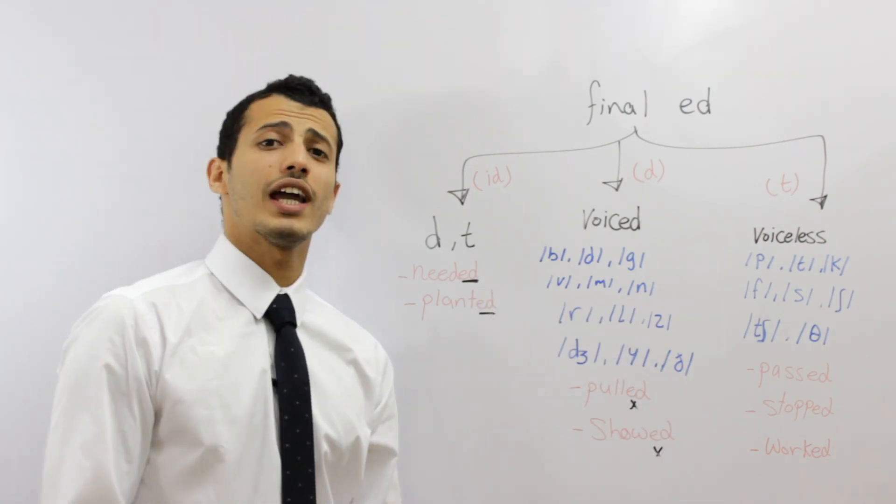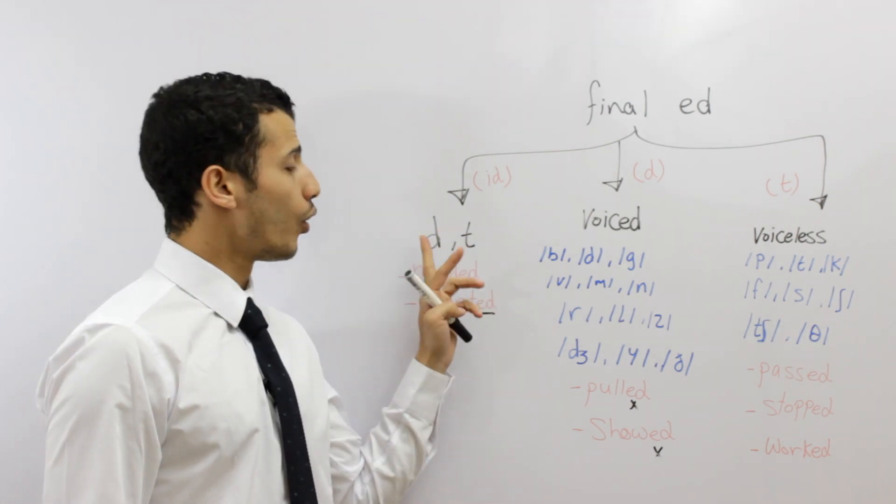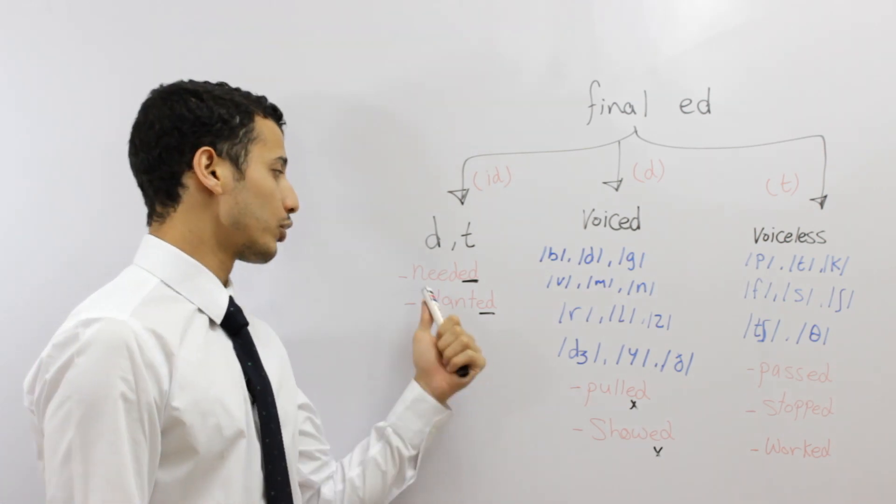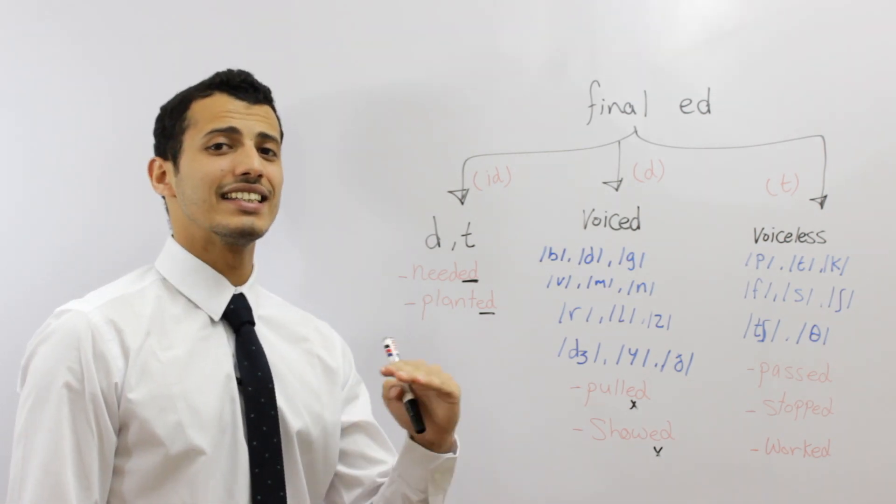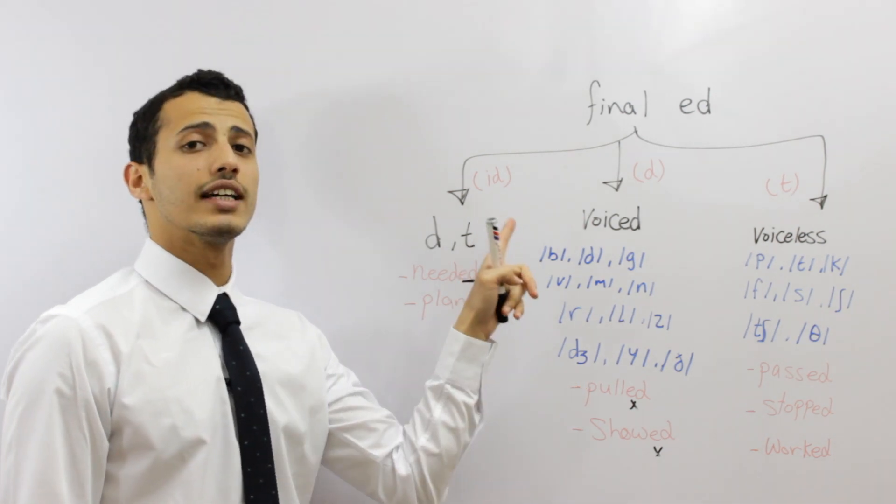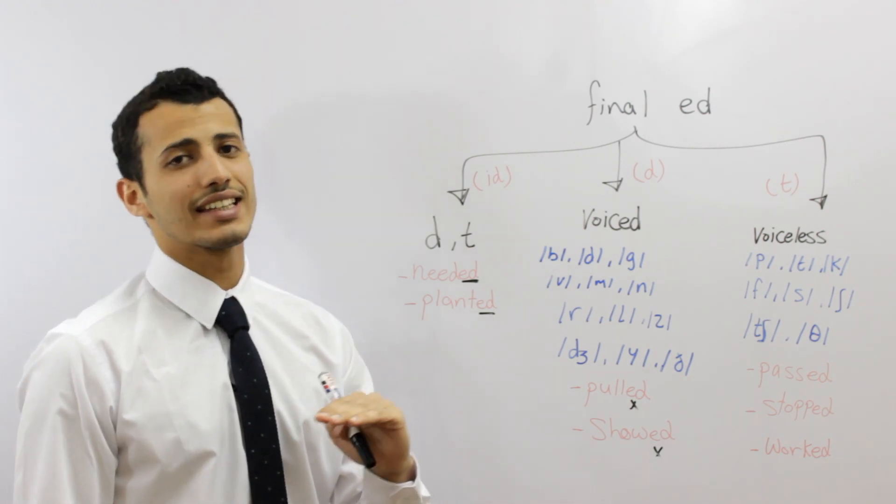We've got three cases to pronounce the ED. Case number one guys, whenever we have a word that ends with a D or T, we're going to pronounce the ED as ED. For example, we're going to say needed, need ED, needed, an extra syllable which is the ED. Or, planted, plant, planted, planted.